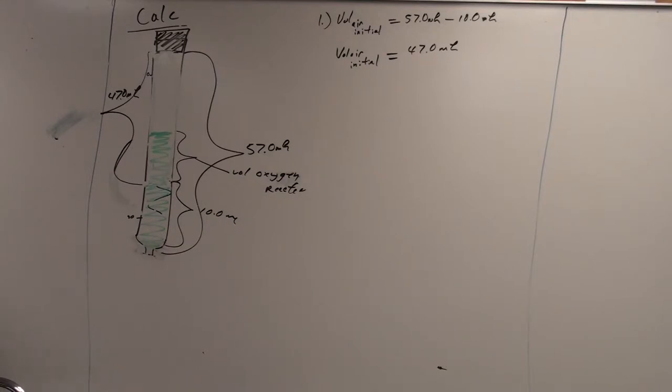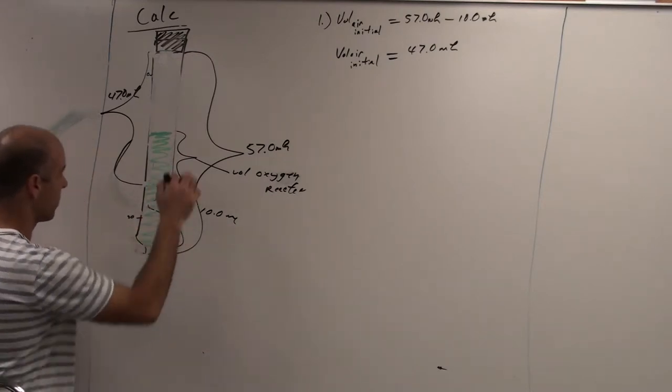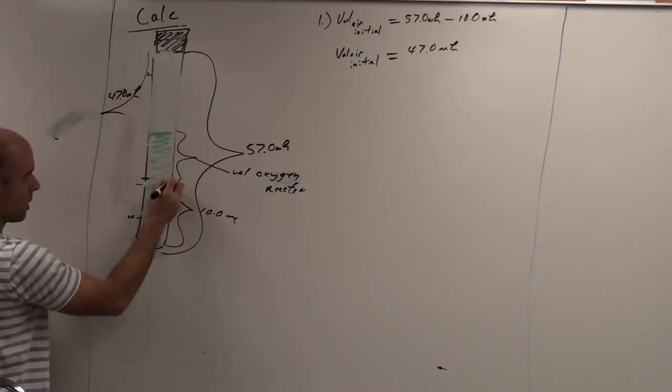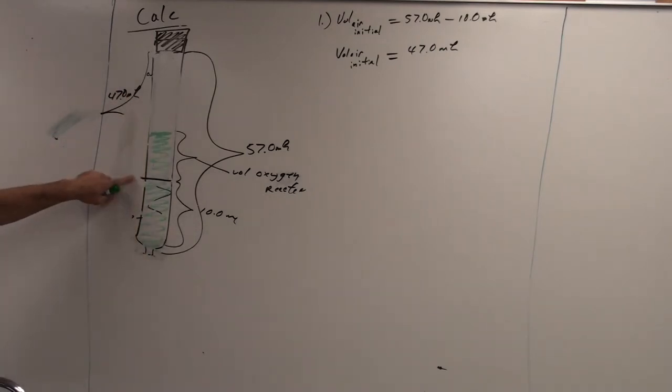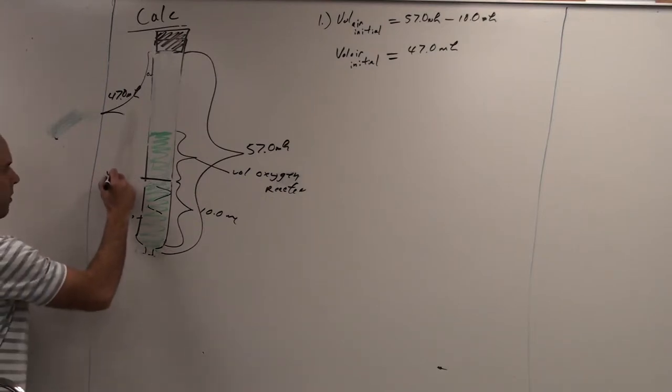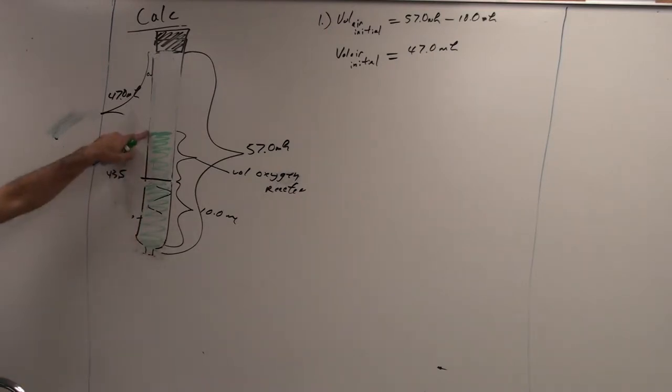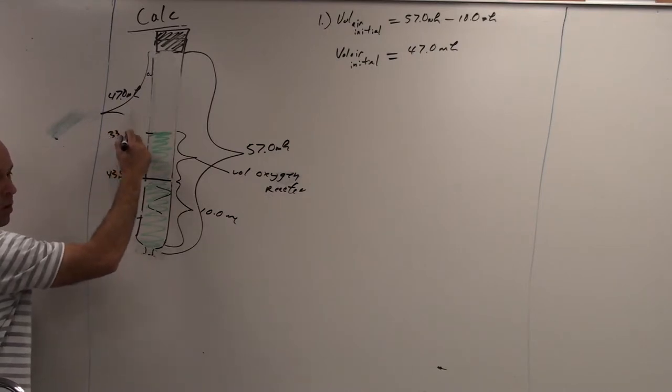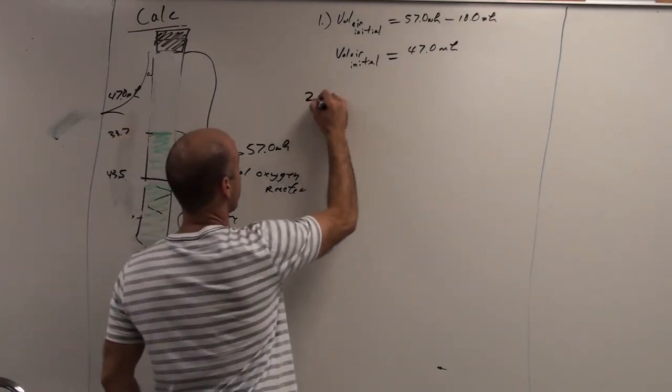So you wrote down this number, whatever that level was. Okay? So what is that initial level of the cobalt chloride? So what was that on your burette? 43.5. 43.5. Okay. Then, what was the final number? 43.7. So then we're going to calculate the volume of oxygen.